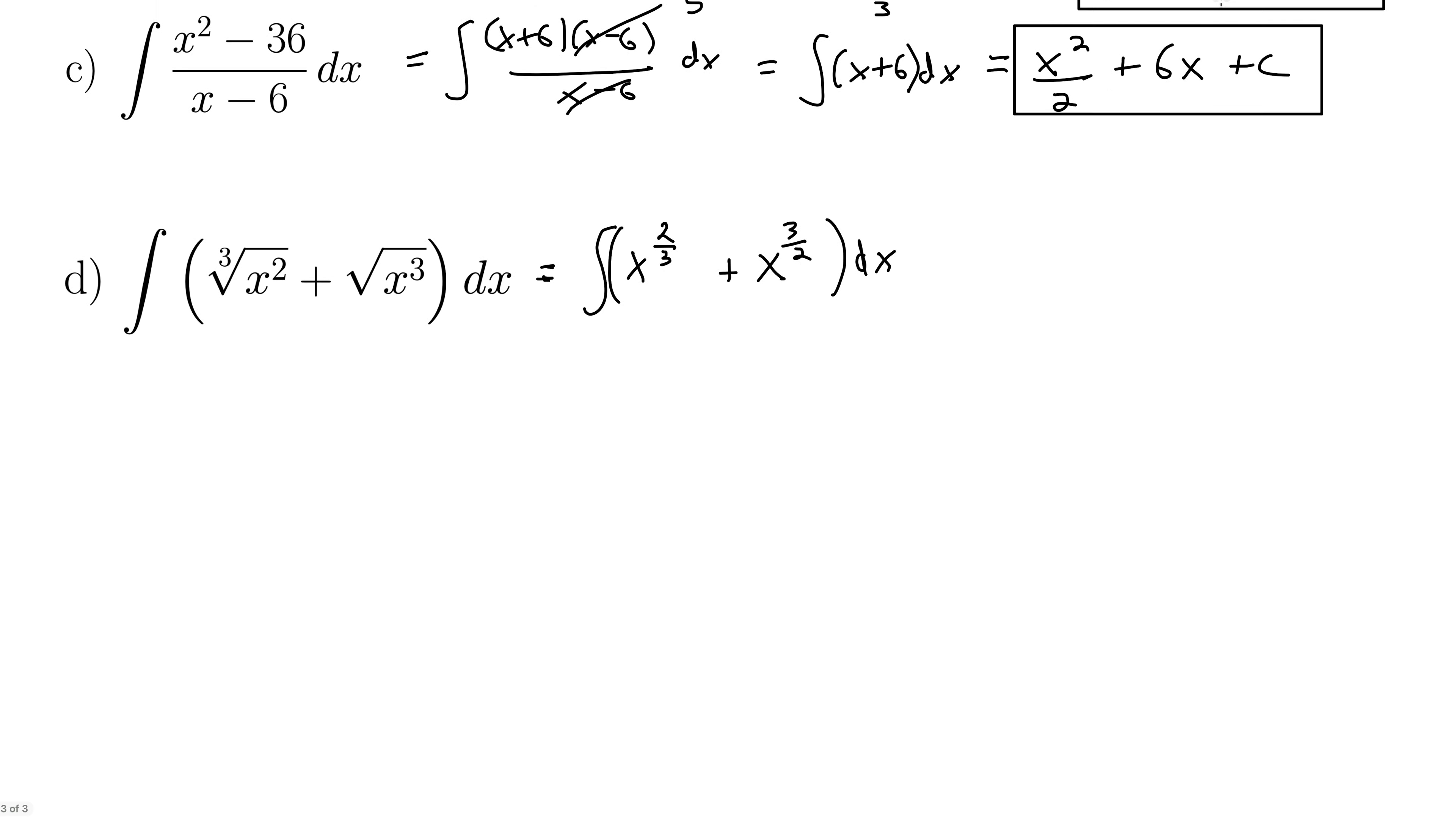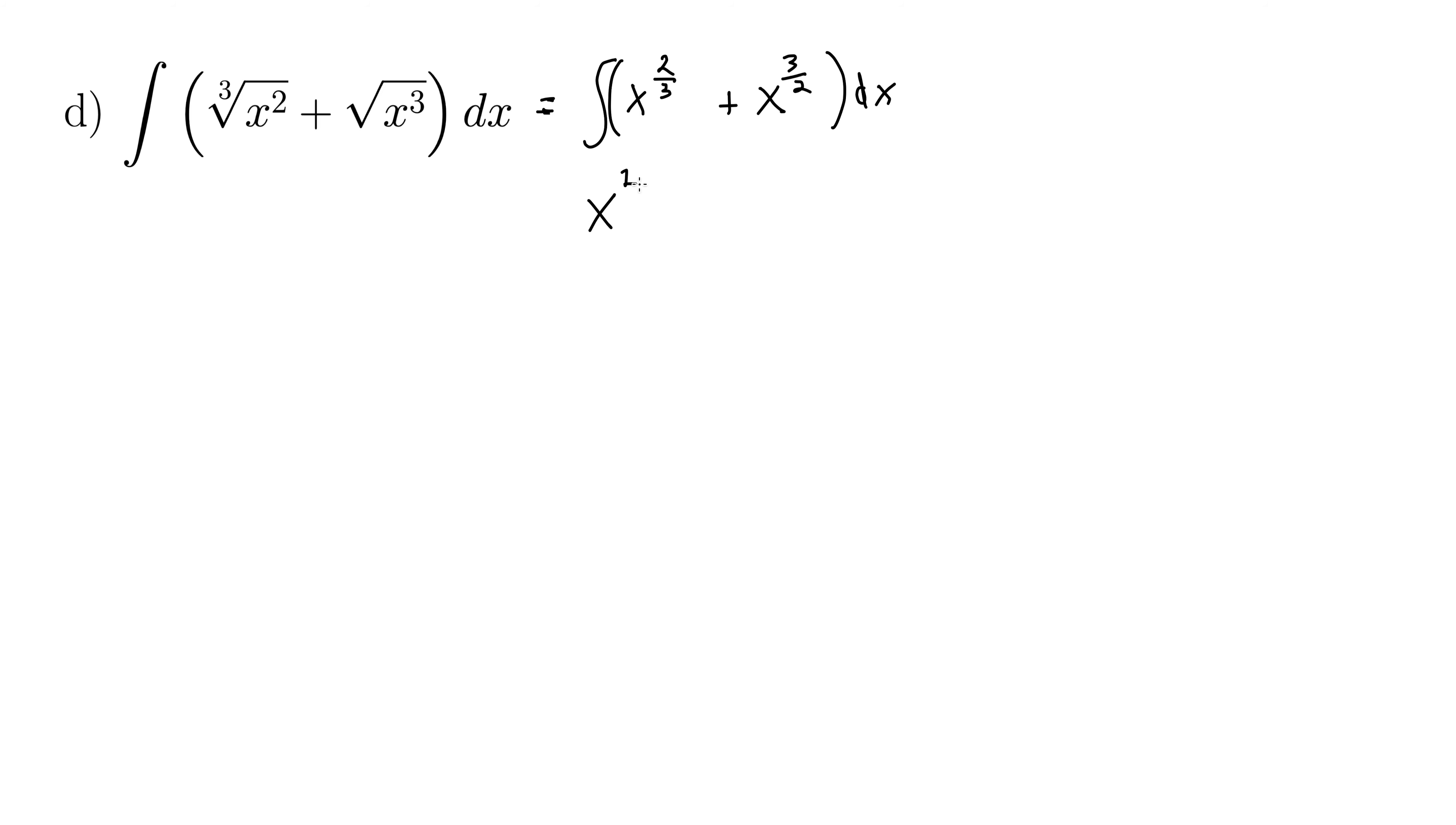Well now we hit this with our power rule for integrals. So this becomes x to the 2 3rds plus 1 over 2 3rds plus 1. Plus x to the 3 halves plus 1. I'm just evaluating it with the product rule. Over 3 halves plus 1. Don't forget the plus c. Well here we're going to need some common denominators. Nothing wrong with that. Let's do 3 over 3. And on the other one, let's do 2 over 2. So this now becomes x to the 2 3rds plus 3 3rds, which is x to the 5 3rds. So we have x to the 5 3rds over 5 3rds. Well, we can multiply by the reciprocal and write that as 3 5ths x to the 5 3rds. And that's going to be a common technique. When you're dividing by a fraction down here, you very quickly will find yourself just multiplying by the reciprocal and calling it good because it is good.